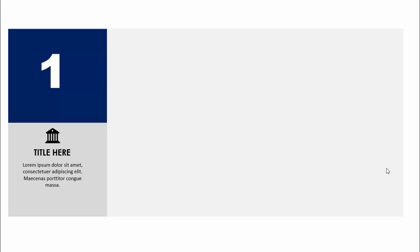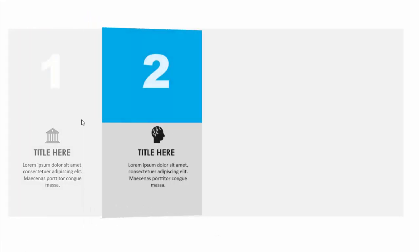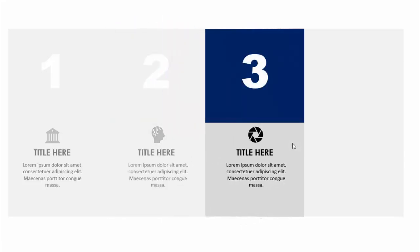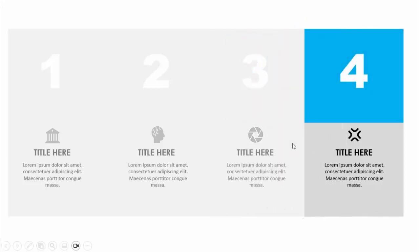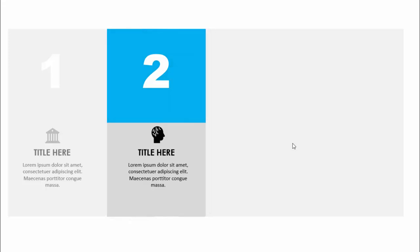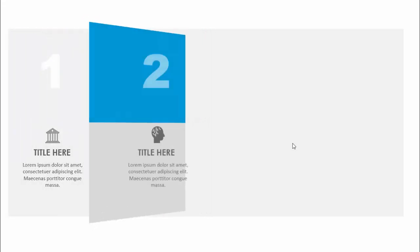In today's tutorial I'm going to show you how to create this simple morph transition slide in PowerPoint. I have put two rectangles here where I put option number one — you can add the icon, the title, and the detailed text. When I click, you can see it going towards option two, how it's flipping, then option number three, option number four. Depending on the requirement you can increase or decrease these options.